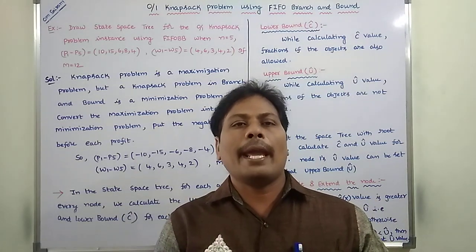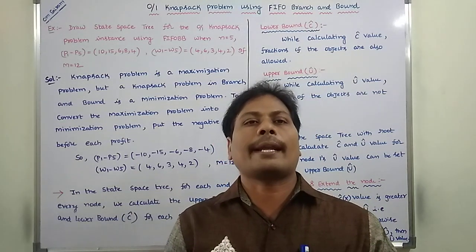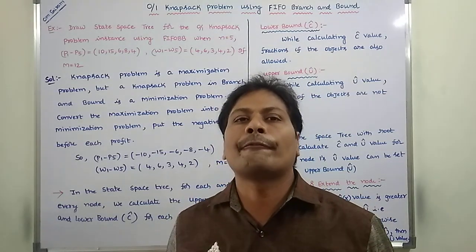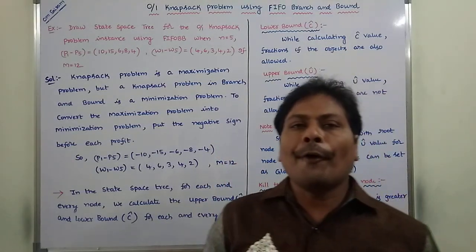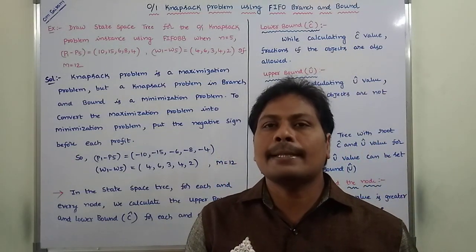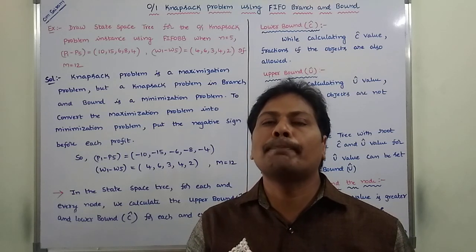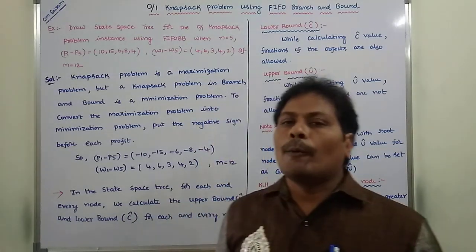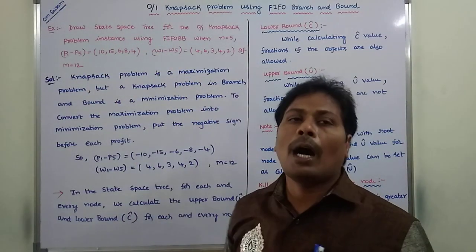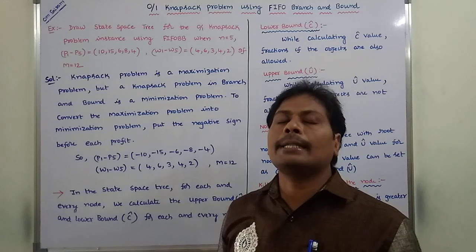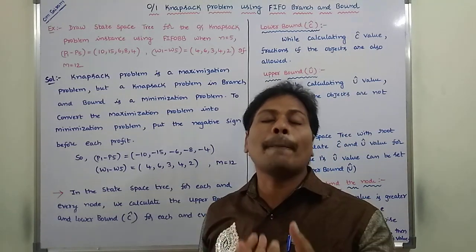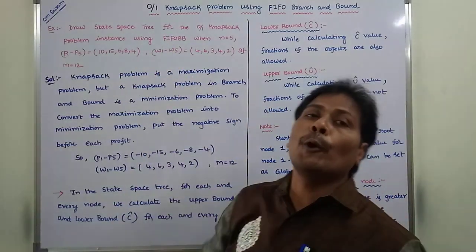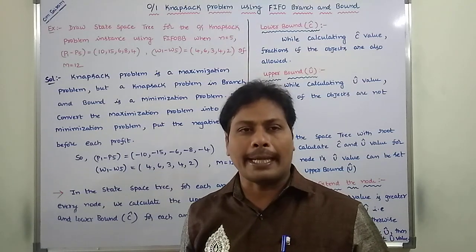Hi friends, today I am giving a lecture on the 0/1 knapsack problem using FIFO branch and bound. FIFO branch and bound means first in first out branch and bound. We will look at an example problem and the procedure we have to follow for solving this FIFO branch and bound knapsack problem instance.